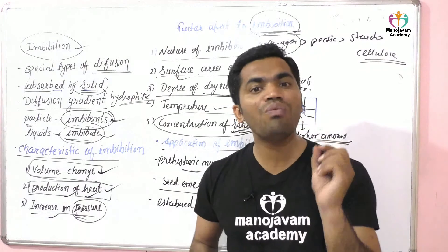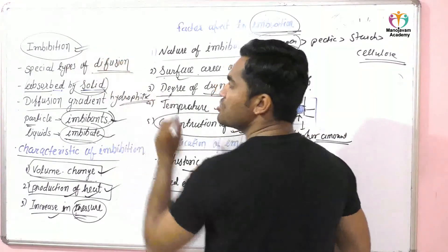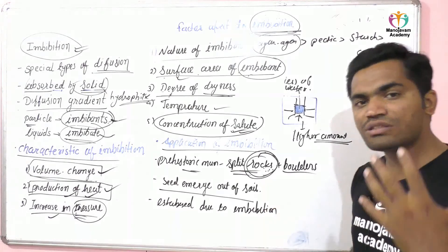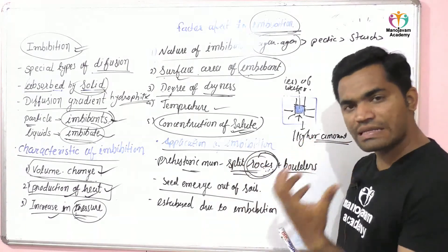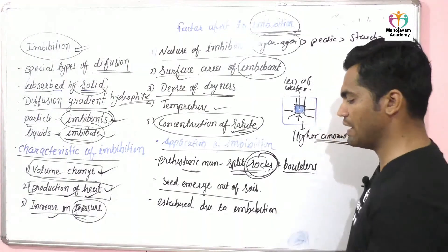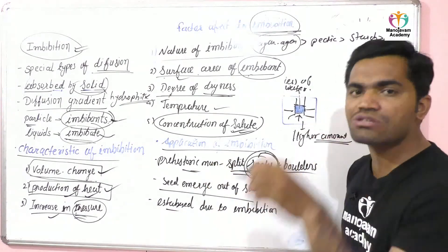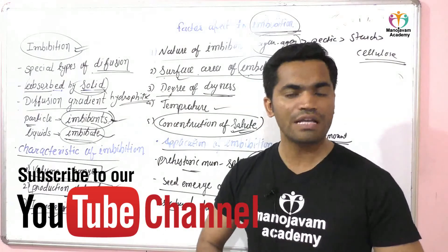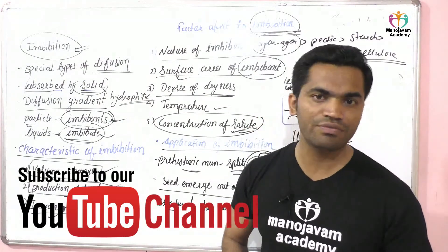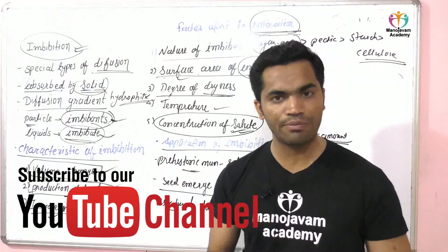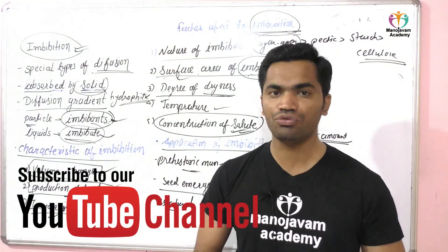The second application is seed germination. Seeds are put into soil and absorb water — this absorption process is imbibition, and seeds emerge out of the soil due to imbibition. The third application is establishment of the seed in soil after germination, which also depends on imbibition. So imbibition is one type of water transport and a type of diffusion, and it is very important in plants, especially in the seed germination process.